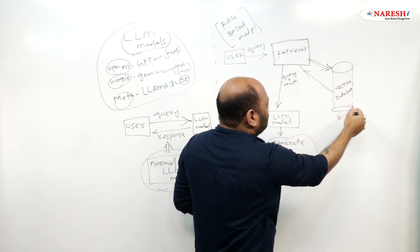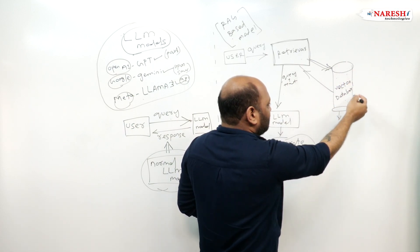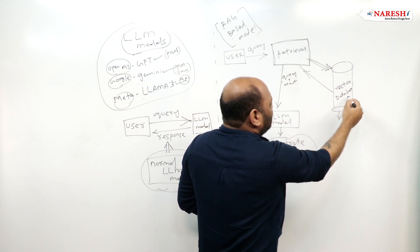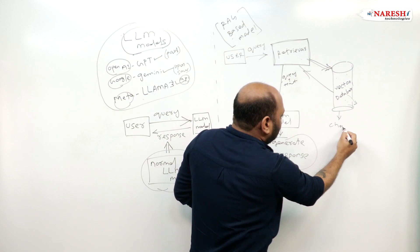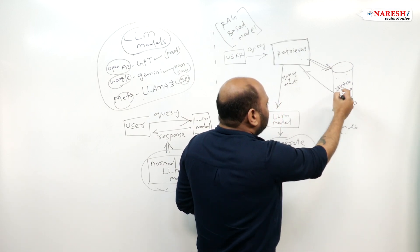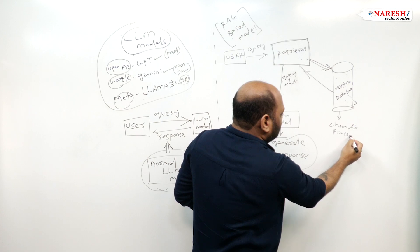This storage, many people call knowledge base or data store, is called a vector database. We have many vector databases like ChromaDB and FAISS DB.